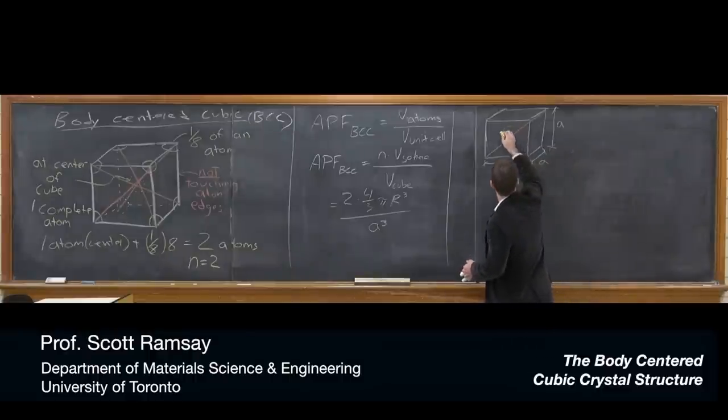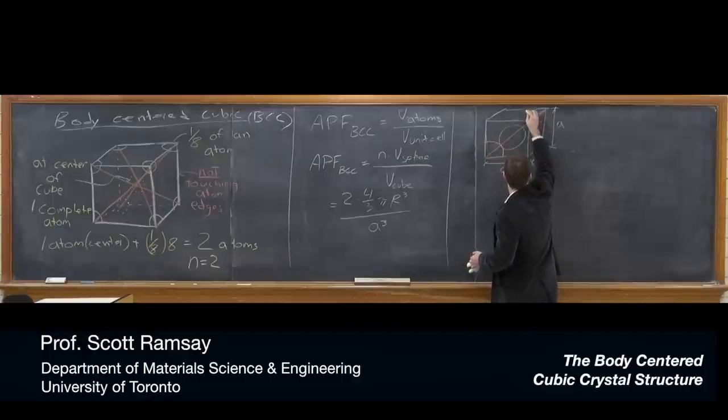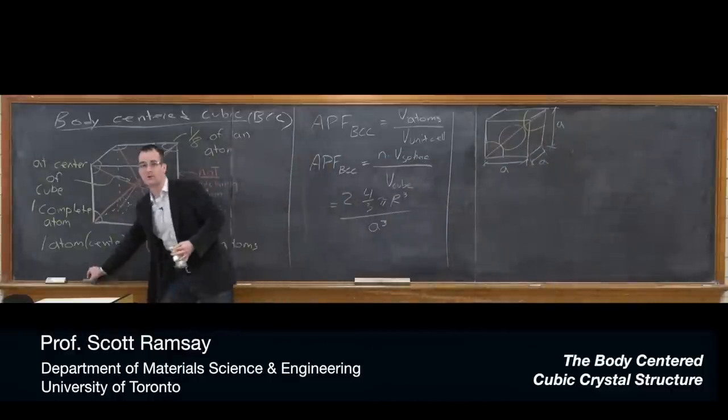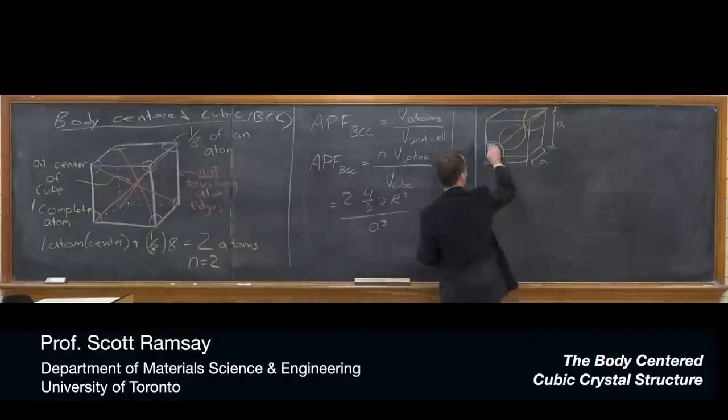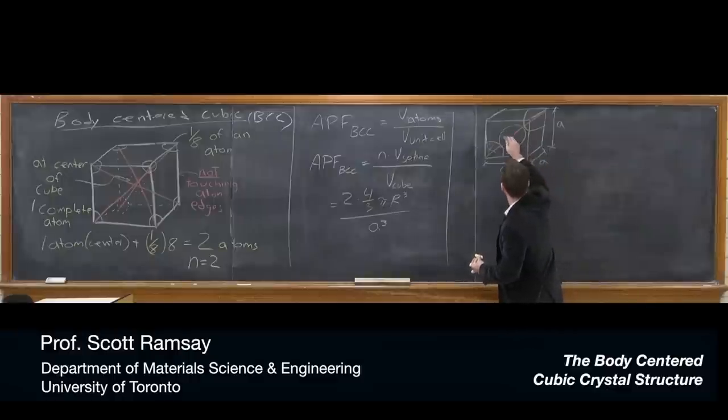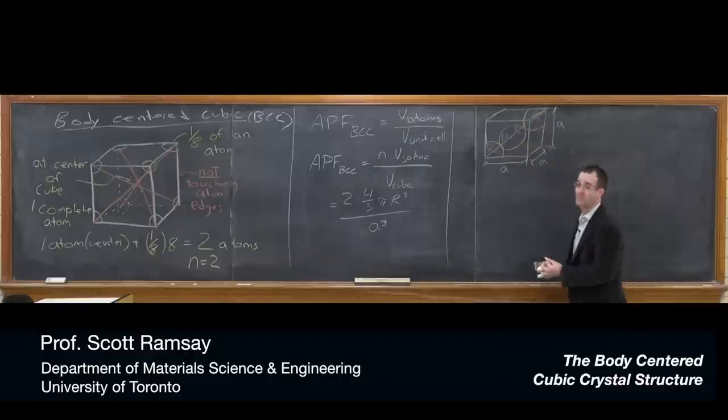And if I try to draw the atoms in as if they were really hard spheres, you would see that it looked something like this. So you can hopefully see that we've got four radii across the cube diagonal. There's one at the bottom front left, two radii through the center, and then one more here.